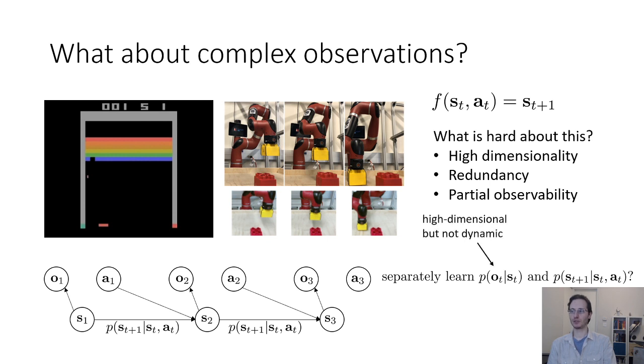Because P of ot given st handles all the high-dimensional stuff, but it doesn't have to deal with the complexity of temporal dynamics. Whereas the P of st plus 1 given st at has to deal with the dynamics, but it doesn't have to deal with the high-dimensional stuff. And maybe this separation of roles can give us some viable model-based RL algorithms for image observations.